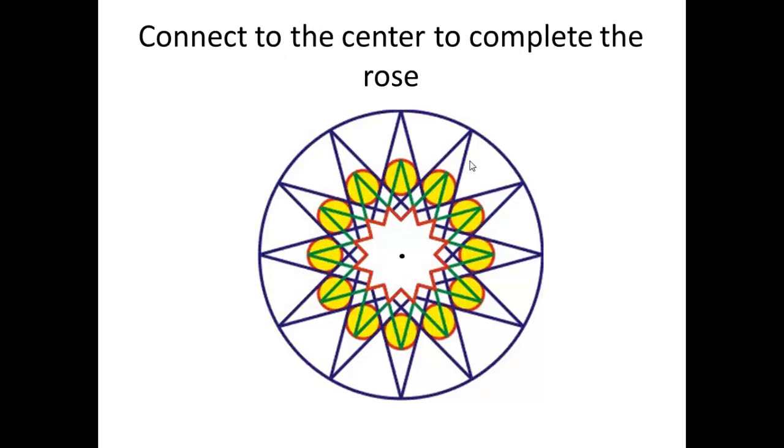Connect to the center to complete the rows. Just start at one of the lower edge of the rows and connect it to the center. Keep going. Connect all 12 low point to the center and you will have your rows.